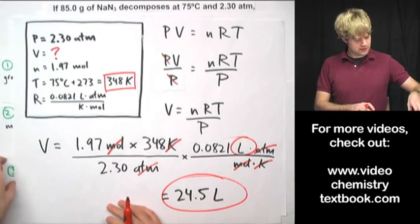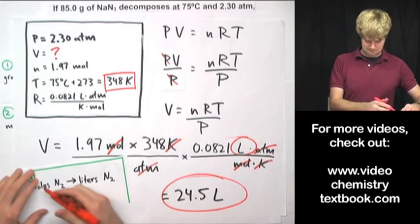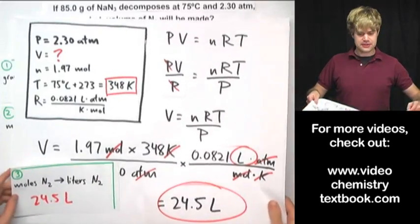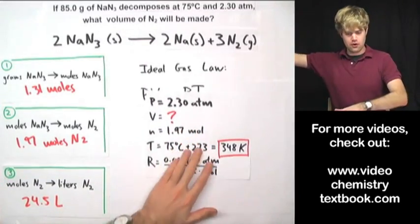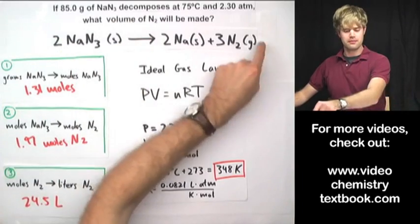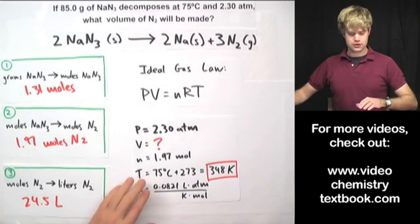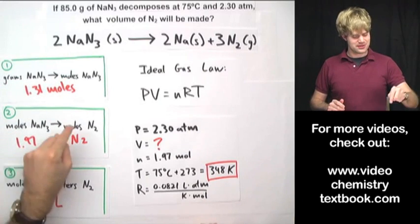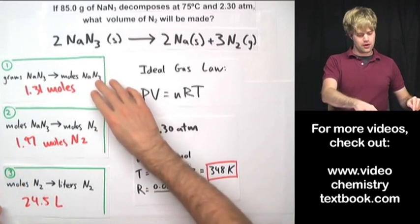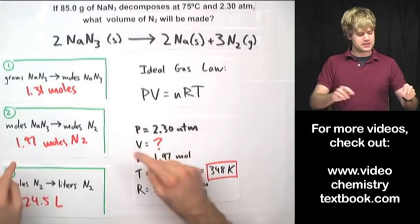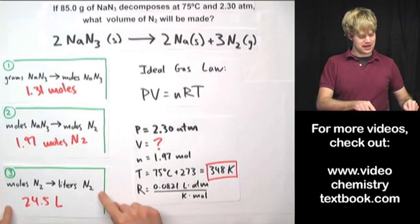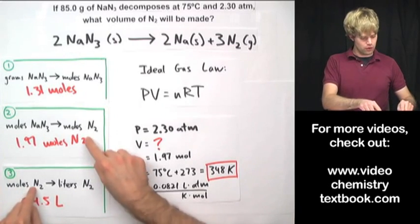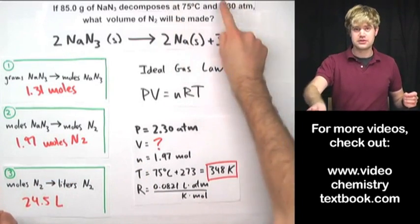24.5 liters is my final answer for the volume of N2 produced. To recap: we started with grams, converted to moles of sodium azide, then moles of sodium azide to moles of nitrogen, and because it wasn't at STP, we used the ideal gas law to find how many liters that number of moles would occupy at those conditions.